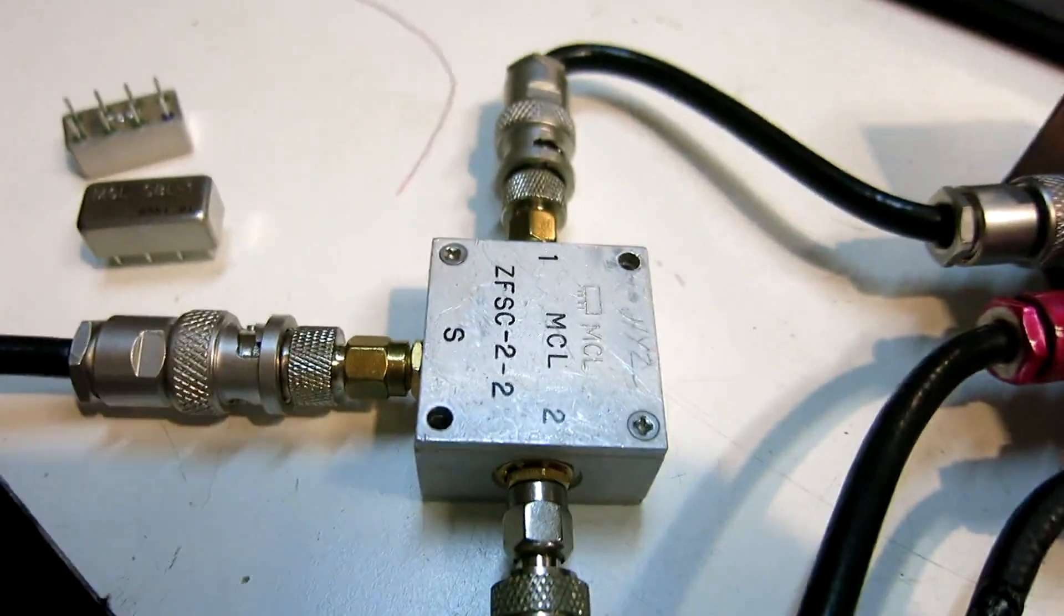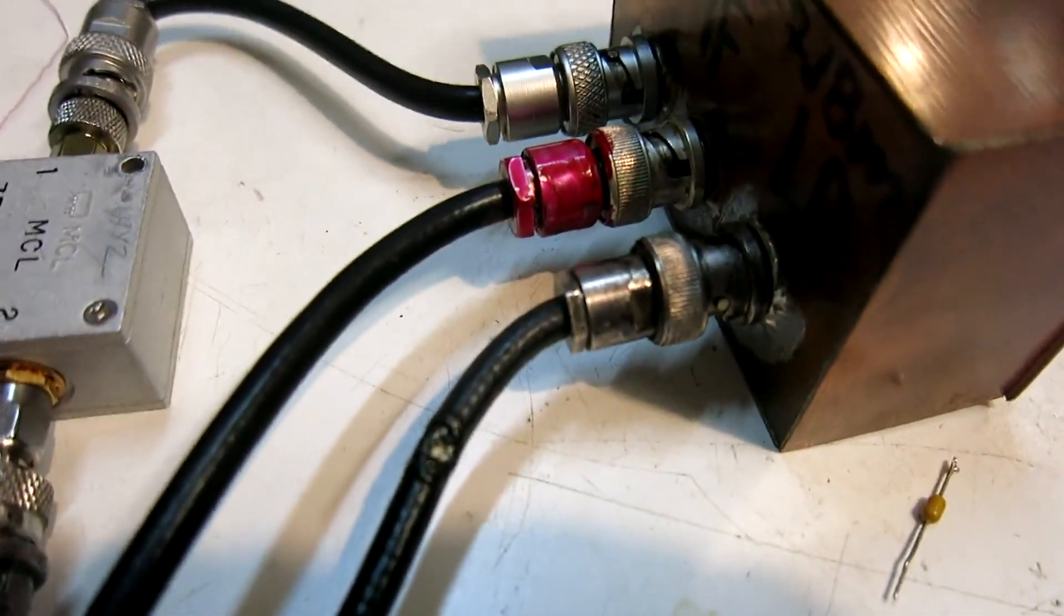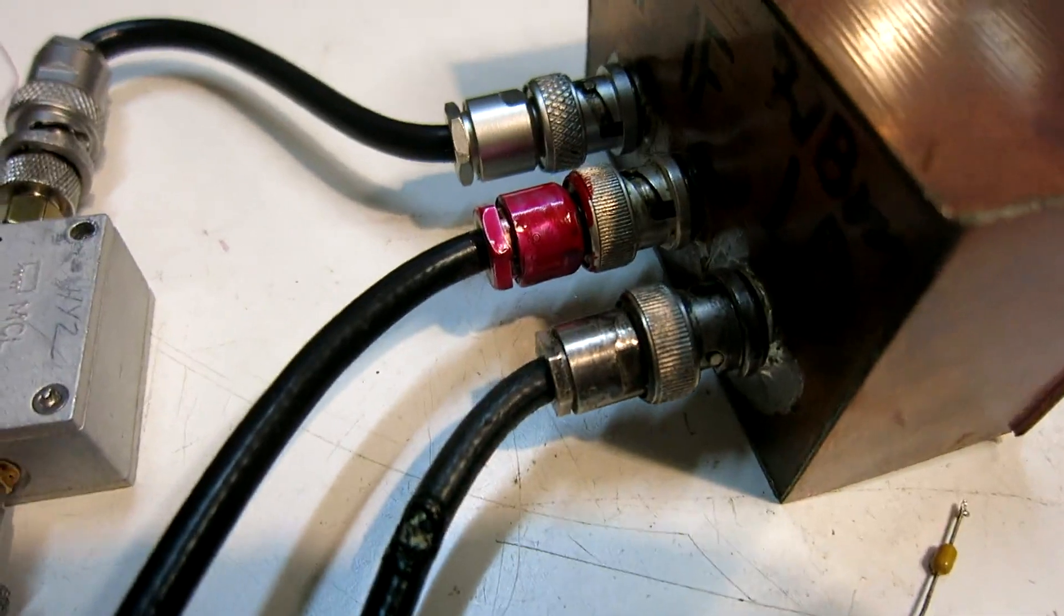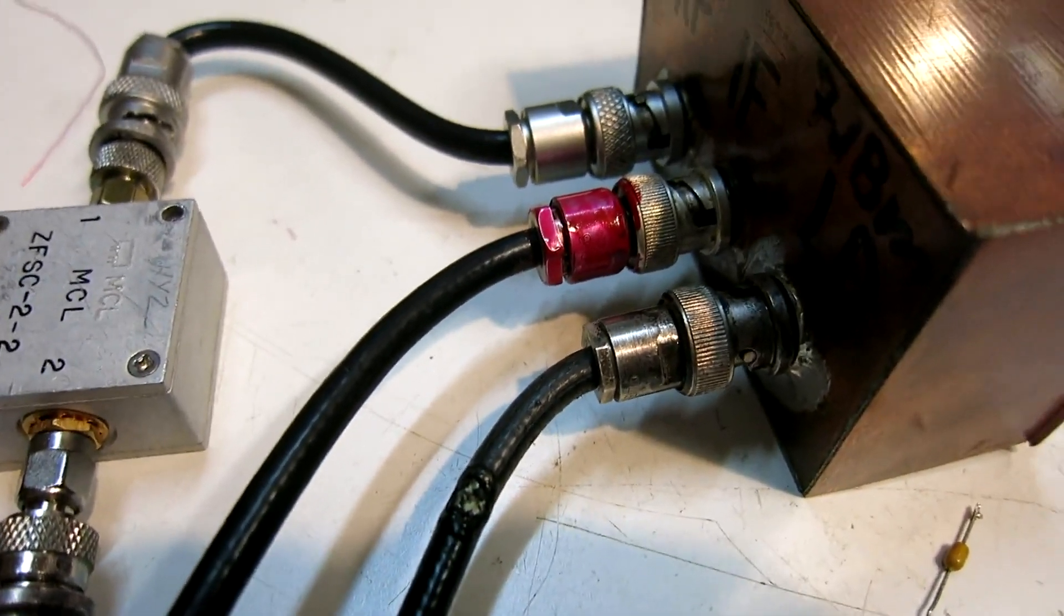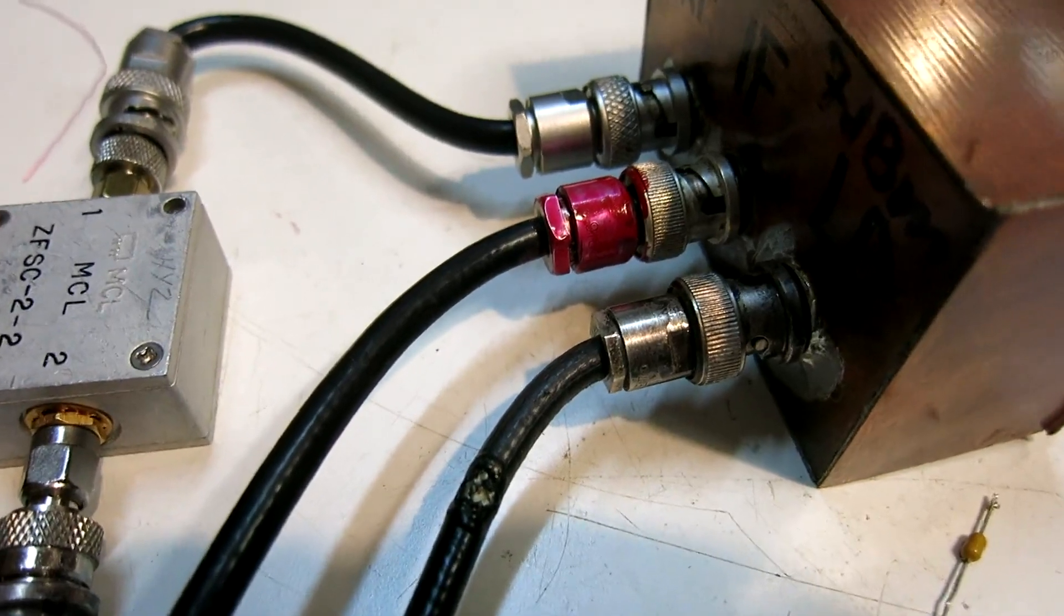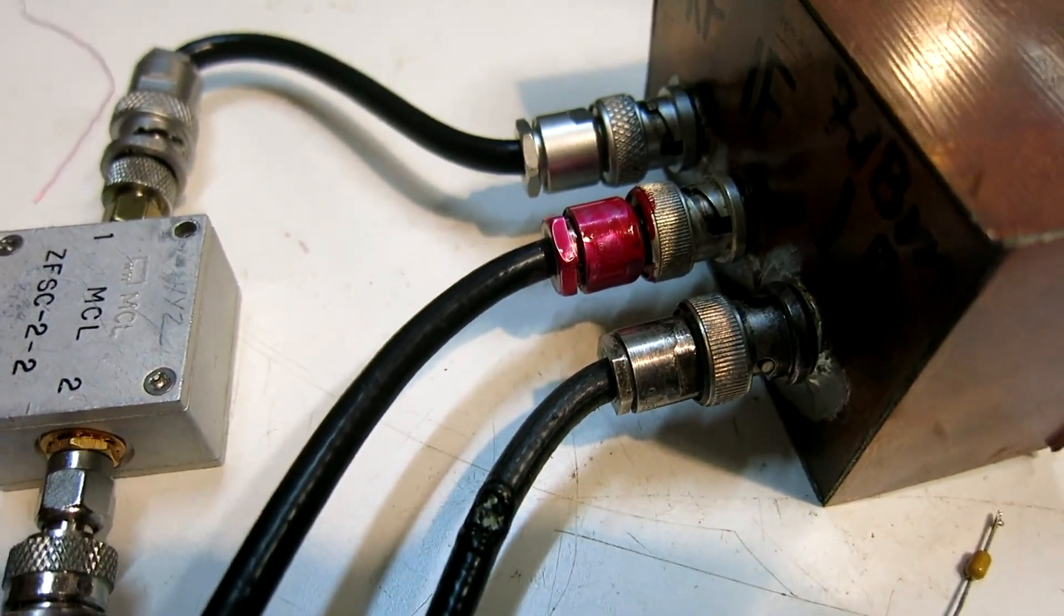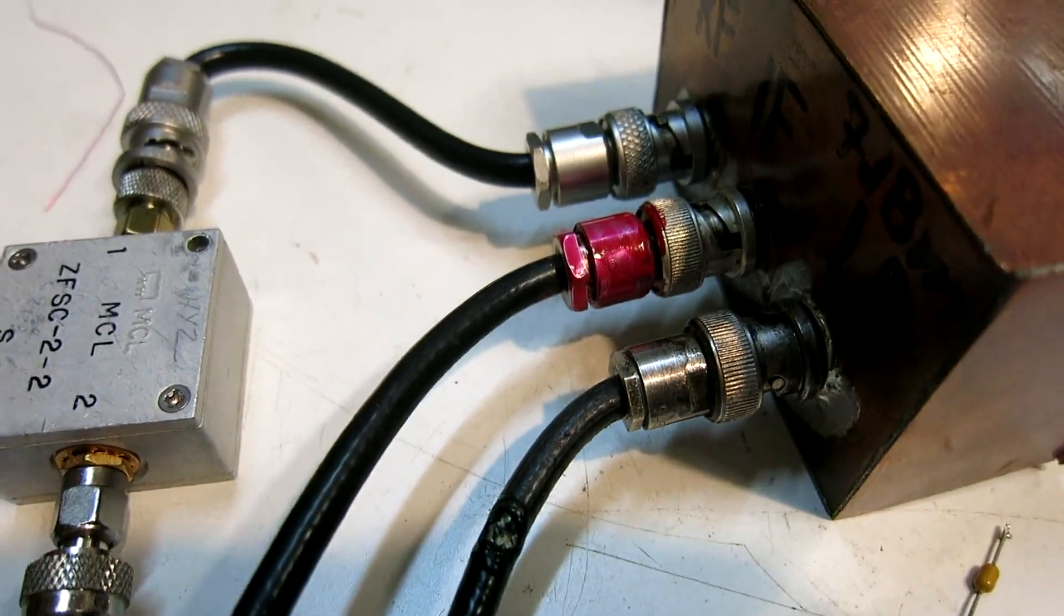With this splitter I feed the same signal into both the RF port and the LO port. So at the output I will have the sum and the difference. The difference is zero, that means DC, and the sum is 20 MHz.